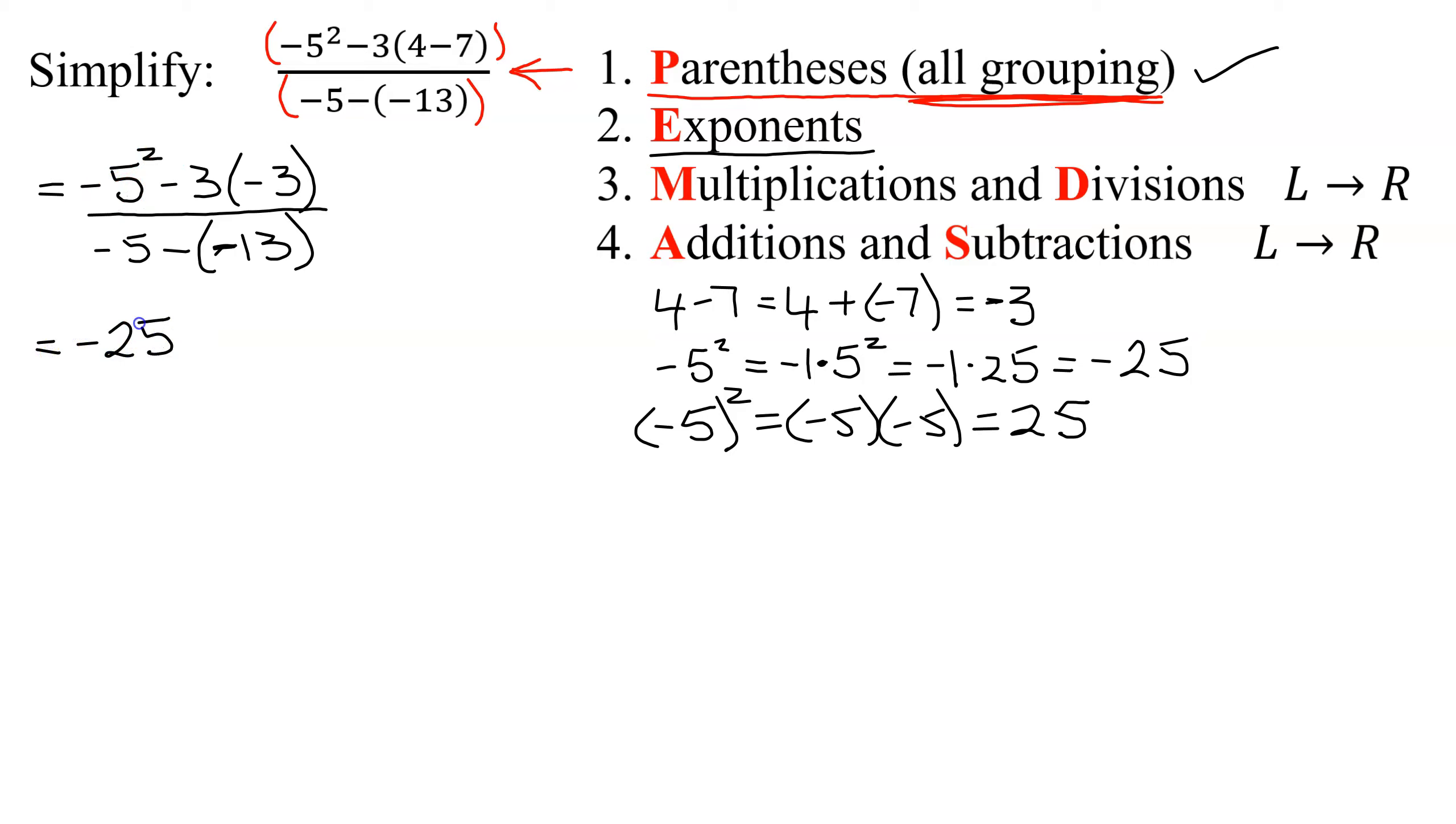So negative 5 squared, we've just shown, is negative 25 minus 3 times a negative 3, all divided by negative 5 minus a negative 13. So I've taken care of exponents.